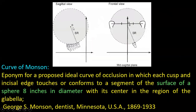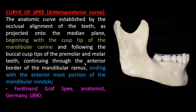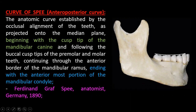The Monson curve is three-dimensional — present in both the sagittal and frontal sections. In the sagittal section, all teeth fall on this sphere, and in the frontal section, the molars fall on the sphere surface, following both complete denture and natural dentition arrangements. The anteroposterior curve is called the curve of Spee — it starts from the tip of the canine, goes to the distal cusp of the molar, and ends at the most anterior part of the condyle.